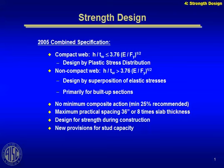Most composite beams — the size of the beam itself is controlled by the stresses during construction, that is pre-composite, and then you check it for the composite state and select the shear connectors based on the composite state. We found that the strength during construction actually controls the size in many cases. Be aware that the AISC does have new provisions for the design of shear connectors, and we'll talk about that a little bit.